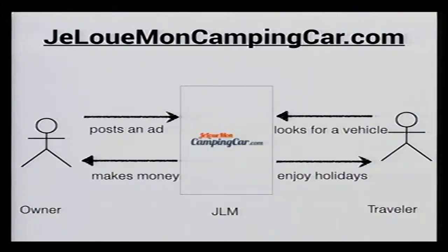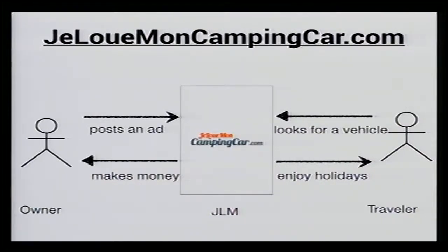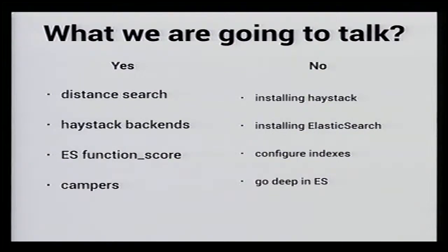So what we do at jelumocampingcar.com — I'll just say GLM from now on because that's quite long — GLM is a private camper hire platform. We try to connect camper owners and travelers. The owner posts ads on our website and hopes to make money when the camper is not in use, and the traveler looks for a vehicle and hopes to enjoy holidays traveling over Europe, France, Spain, or wherever. Search is one of our primary features because we have to connect offer and demand. Simply put, we're like the Airbnb of campers.